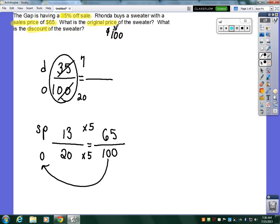Now I'm going to have to do some math to find the discount. 100 is the original. 65 is the sales price. So to find the discount, I just subtract. And the discount received was $35.